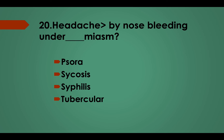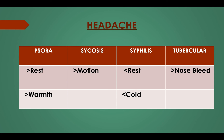Question No. 20: Headache better by nose bleeding under which miasm? Option A, Psora; Option B, Sycosis; Option C, Syphilis; Option D, Tubercular. Answer: Option D, Tubercular. Headache in Psora — better by rest and warmth. In Sycosis — better by motion. In Syphilis — aggravated by rest and cold. In Tubercular miasm — better by nose bleeding.